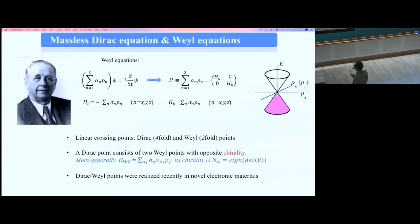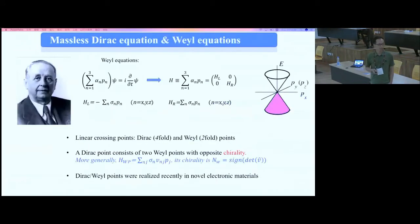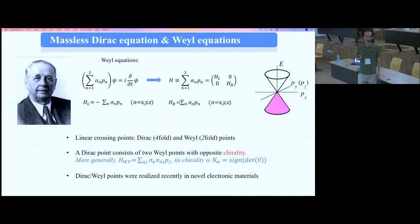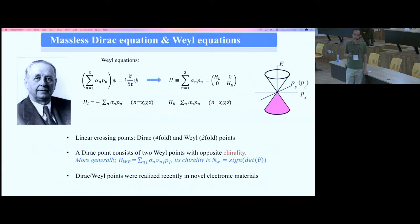Several years later, Hermann Weyl noticed that if you set the mass m to zero, you can divide the Dirac Hamiltonian into two uncorrelated parts — the left-handed and the right-handed fermions. The left-handed Hamiltonian and the right-handed Hamiltonian have opposite signs. This gives you a Dirac cone, which is one of the most beautiful and impactful images we have had in the past decades.